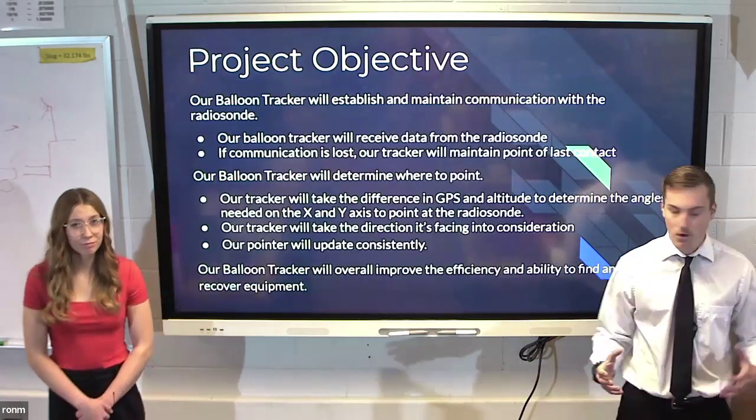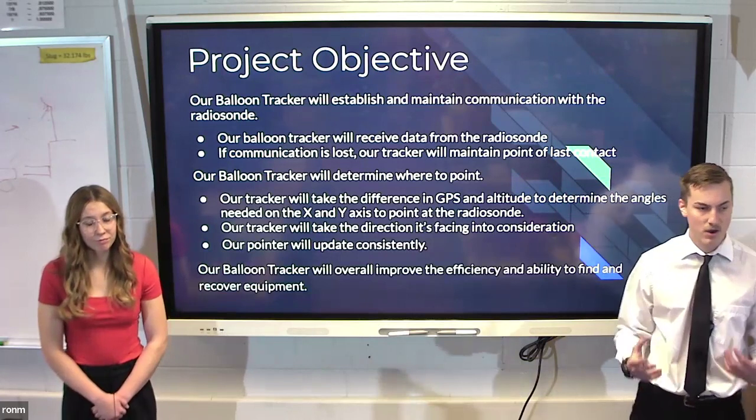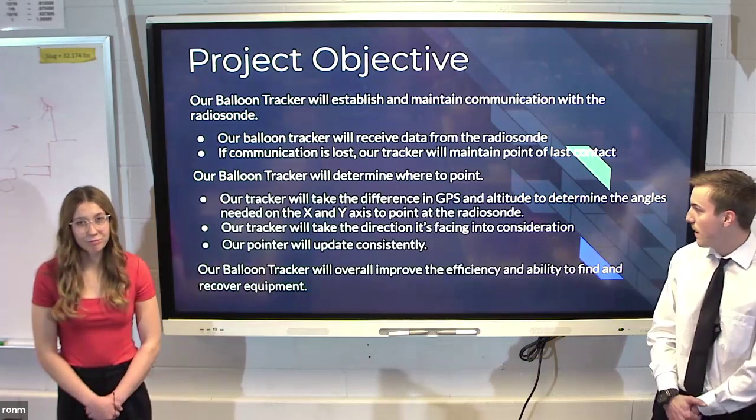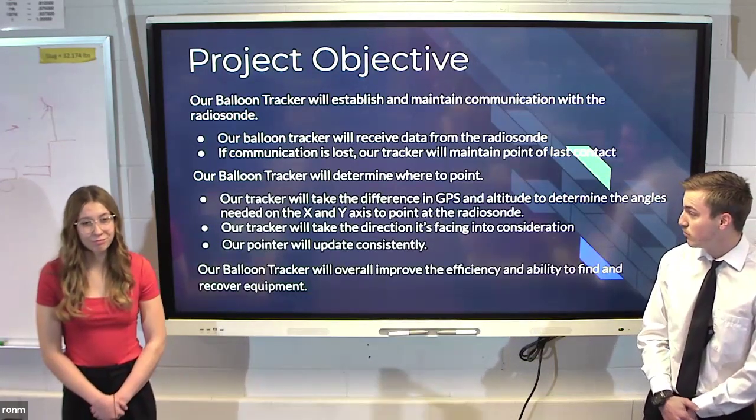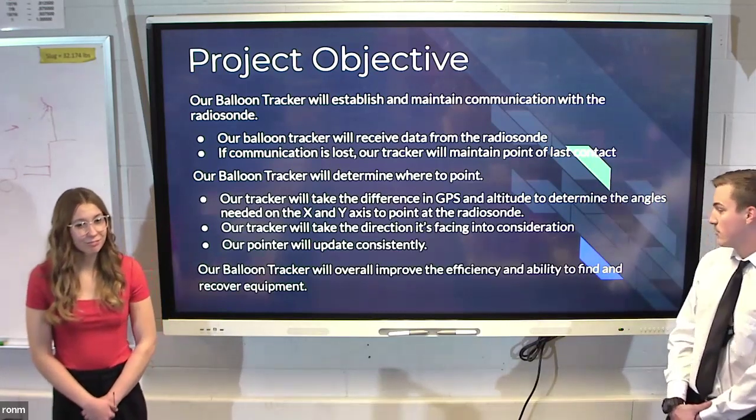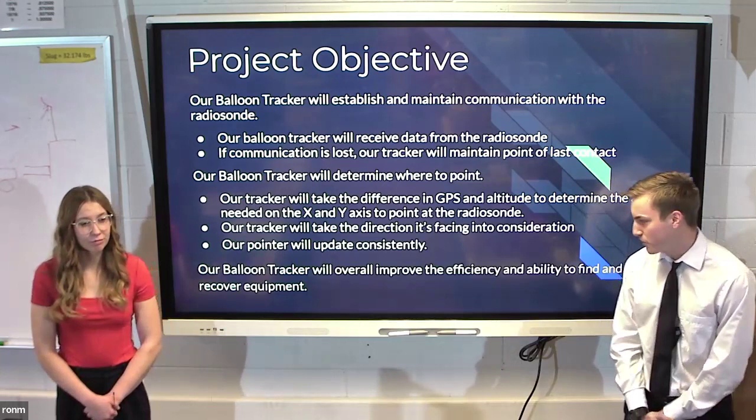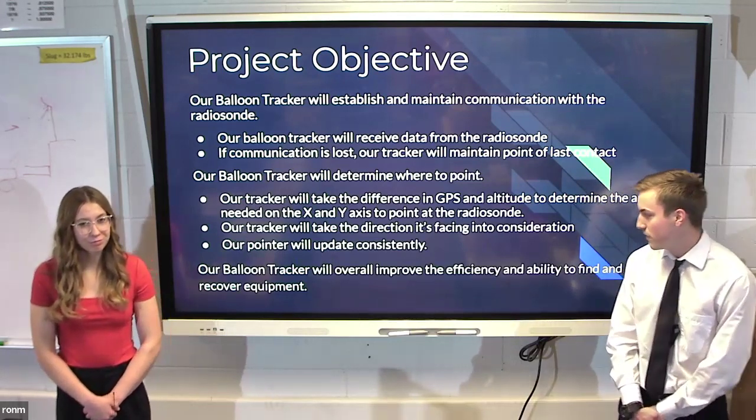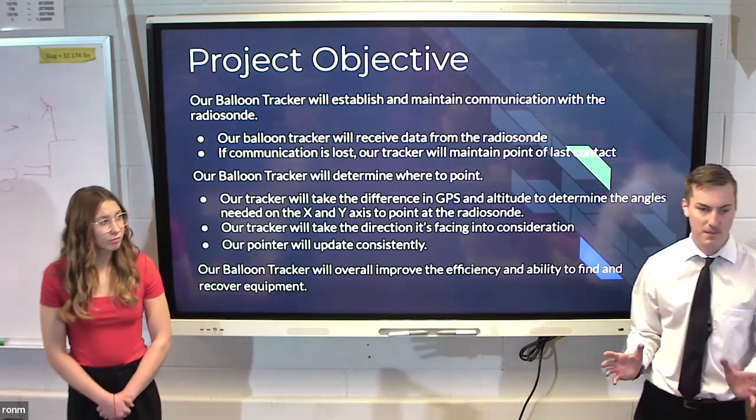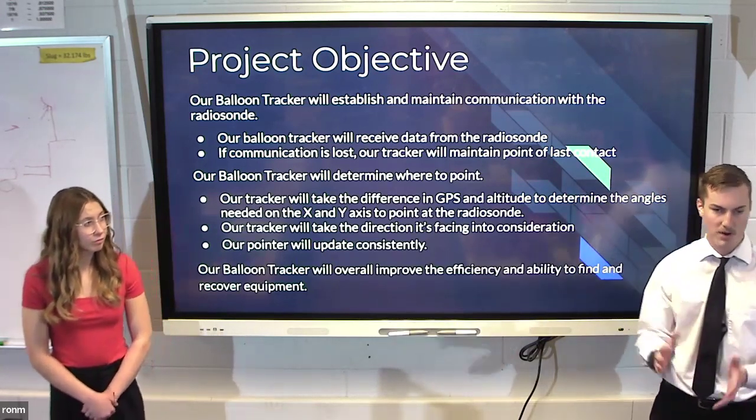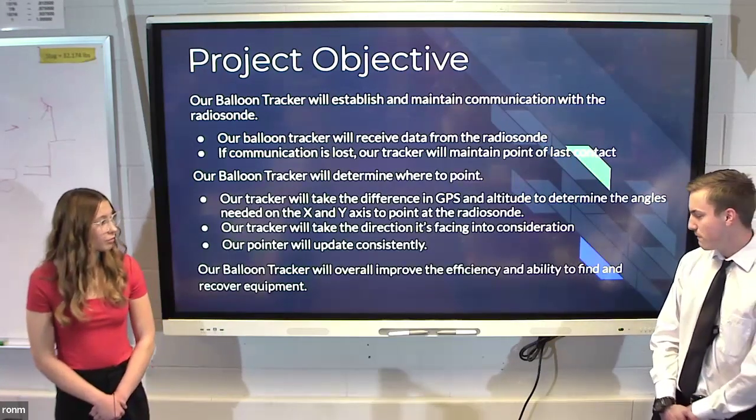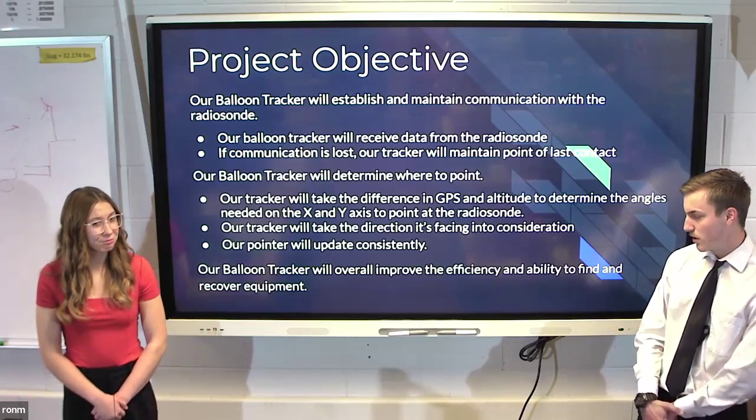So our goal is to make a mobile balloon tracker that will stay in contact with the radio sound and collect data from the radio sound. Our tracker will take the difference in GPS and altitude to determine the angle at which to point at. Our tracker will take into consideration the direction it's facing, that's due to the nine-axis sensor that it has. Meaning that by turning the tracker, it will stay pointing in the right direction. Our tracker will improve the overall ability and efficiency to recover equipment.